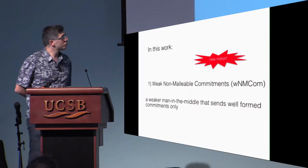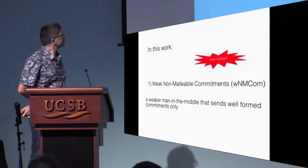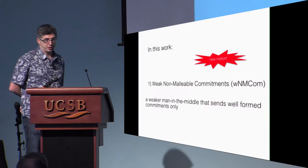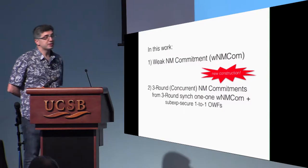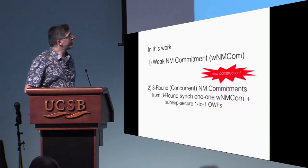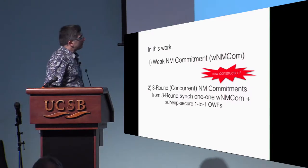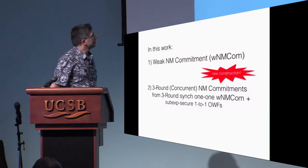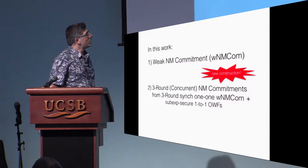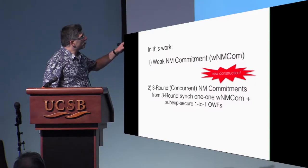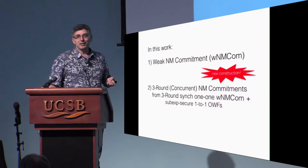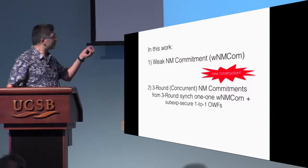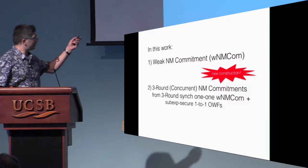First of all, there is a new notion called weak non-malleability for commitments, in which the man-in-the-middle adversary can commit only to well-formed messages. Then there is a new construction: a three-round concurrent non-malleable commitment scheme based on sub-exponentially secure one-to-one one-way functions — a slightly stronger assumption — but it can be instantiated with any three-round synchronous one-one weak non-malleable commitment, amplifying that weak flavor to full concurrent non-malleability.